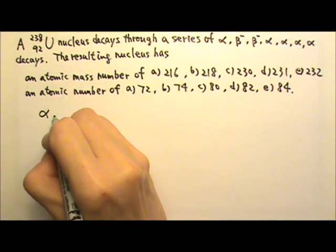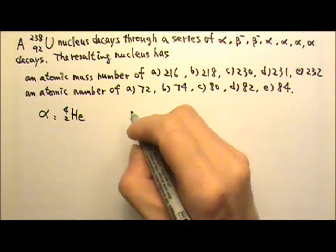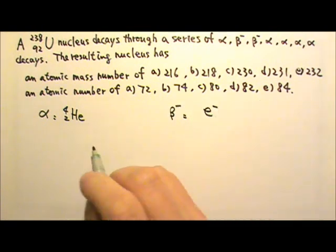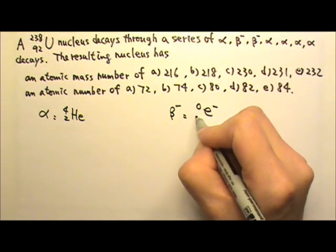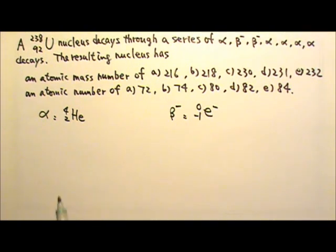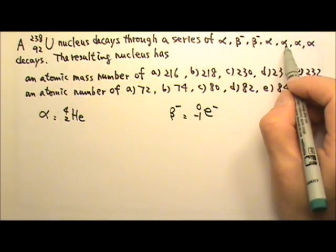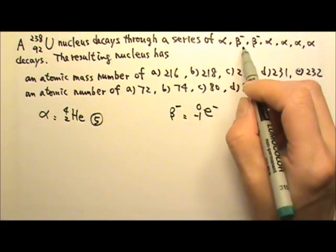An alpha particle is a helium-4-2. A beta negative is an electron. And to help us balance the equations, we need to put in zero, negative one. The uranium nucleus goes through 1, 2, 3, 4, 5 alphas and 1, 2, 2 beta decays.